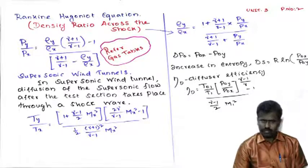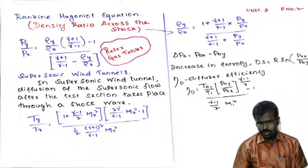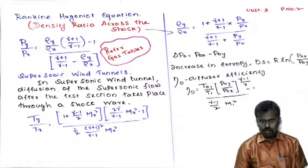Next is ηd, called the diffuser efficiency. The formula is: ηd = [T₀₁/T₁ · (p₀y/p₀x)^((γ−1)/γ) − 1] / [(γ−1)/2 · M₁²].